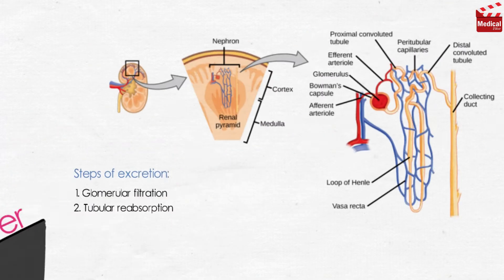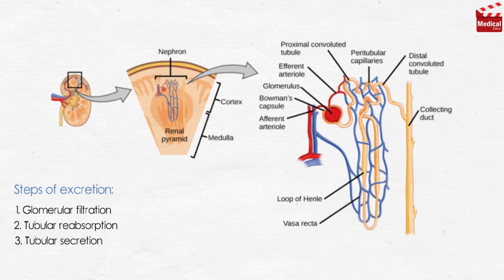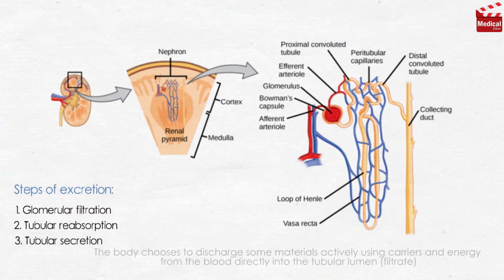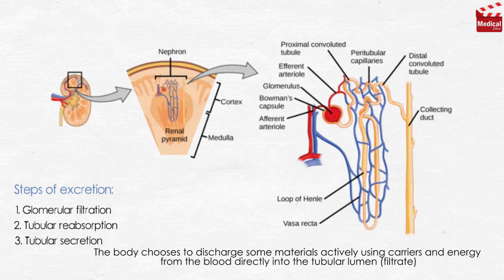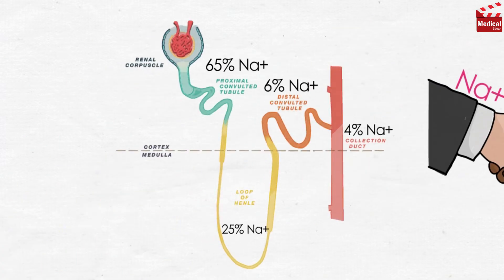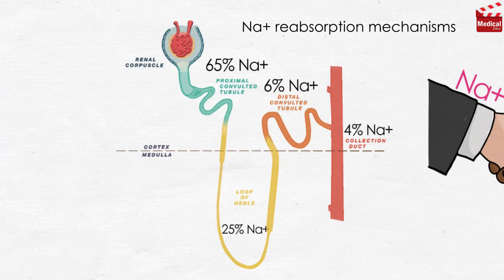The third step is tubular secretion. The body actively discharges some materials using carriers and energy from the blood directly into the tubular lumen to the filtrate. Now let's discuss sodium reabsorption mechanisms in detail, to understand the mechanisms of the different groups of diuretics.